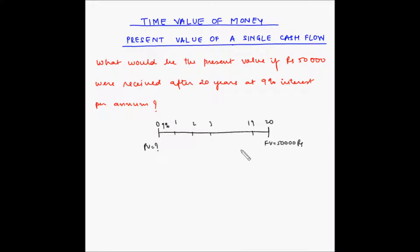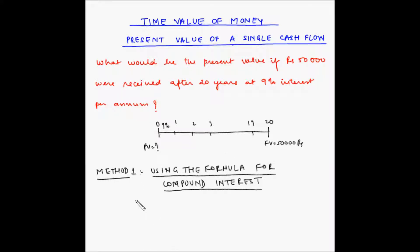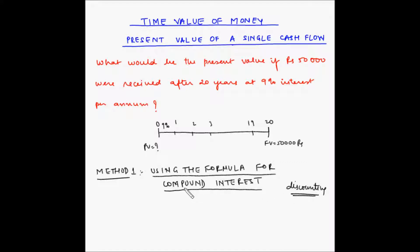We have to find an amount which, when invested today at 9% interest per annum, will allow a withdrawal of rupees 50,000 at the end of 20 years. Let us look at different methods of solving this. The first method is using the formula for compound interest. When you are trying to find the present value and the future value is known, the concept is called discounting instead of compounding — discounting is the reverse of compounding.